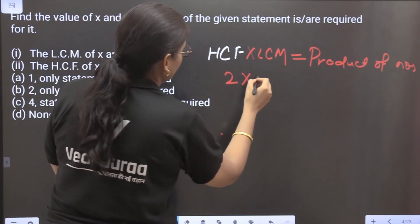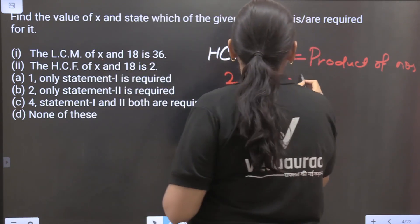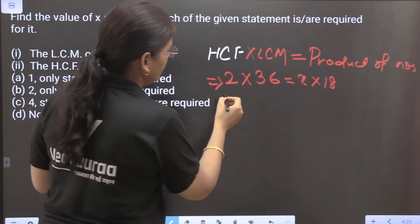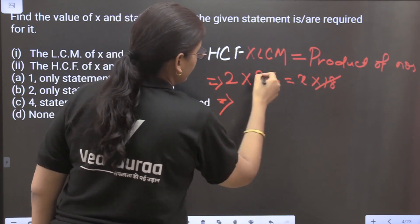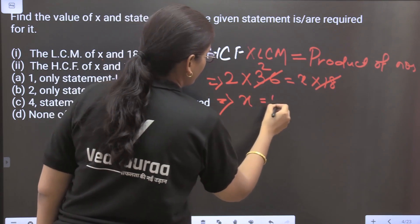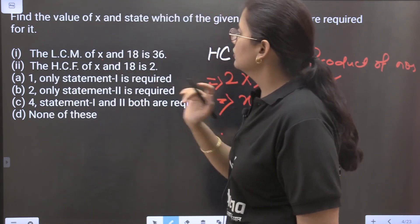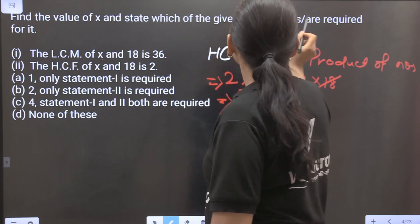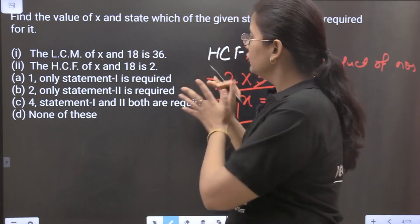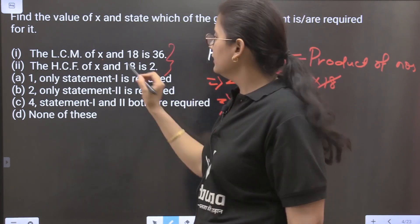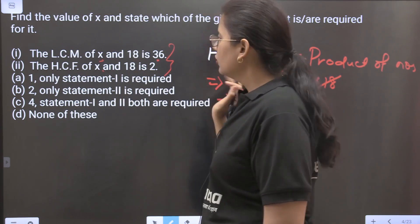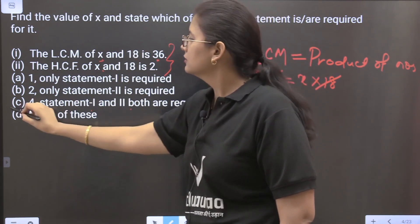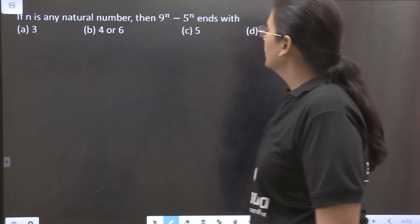Now here if you solve this, then 18, 36, 2, so x equals 4. So you have seen it was said that find the value of x, we have found out it is 4. Now it is saying state which of the given statements are required for it. Now to get this answer we used both these statements. We could not find x with only this or only this. So our answer is 4 and we required both the statements, so statement 1 and 2 both are required.